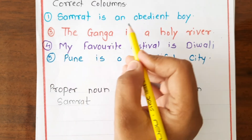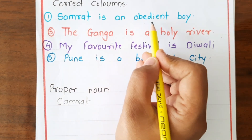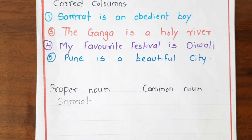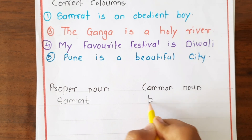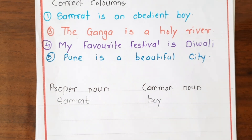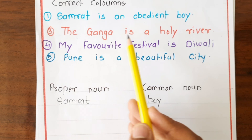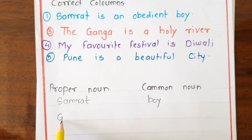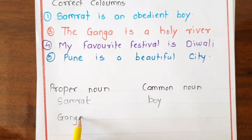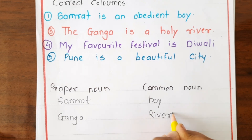In 'Samrat is an obedient boy,' 'boy' is the common noun. Next sentence: 'The Ganga is a holy river.' 'Ganga' is the proper noun and 'river' is the common noun.